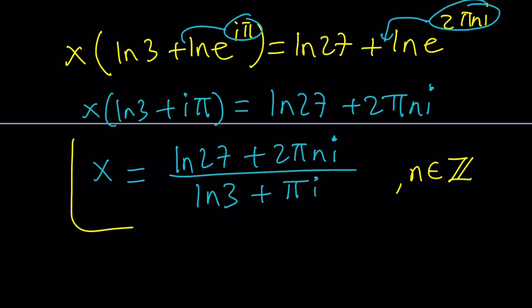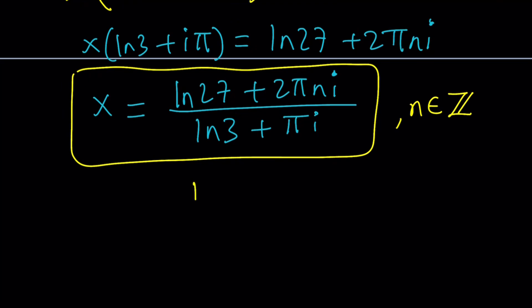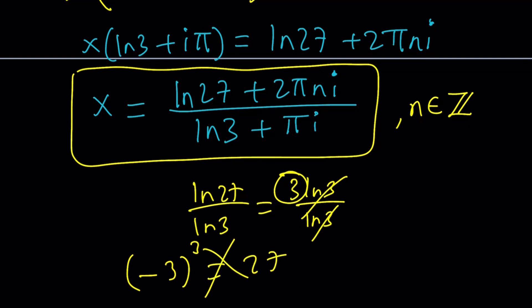But wait a minute. Take a look at this expression. If I didn't have the pi stuff, ln 27 over ln 3 would be ln 3 cubed or 3 ln 3 divided by ln 3 and that would give me a 3. But unfortunately, 3 does not give me 27. This is not going to work. But we're kind of close. So the i needs to get in there.